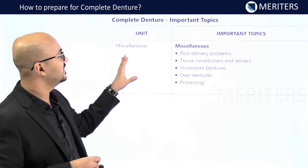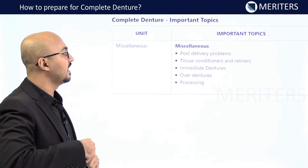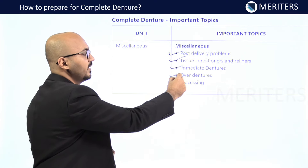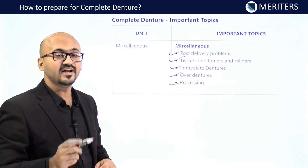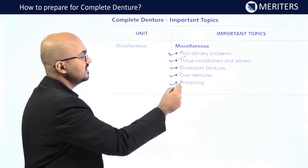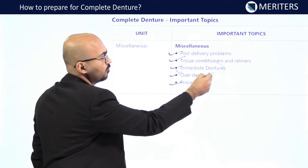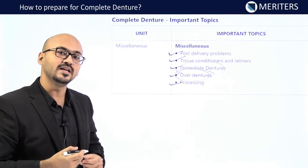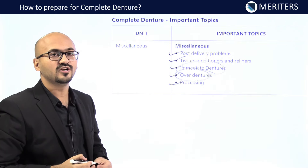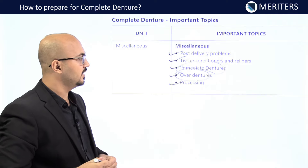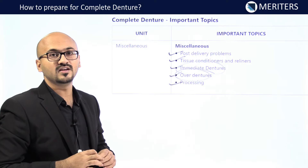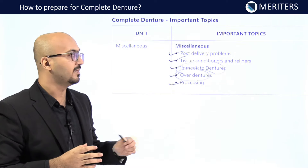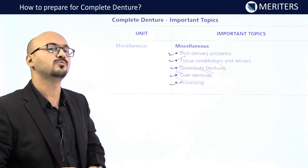Miscellaneous topics include post-delivery problems, tissue conditioners and reliners, immediate dentures, over dentures, and processing. In the last two years, many questions have been asked from immediate dentures and over dentures, as they are clinically in use and theoretically important. These topics are very well covered in the last few chapters of Winkler.